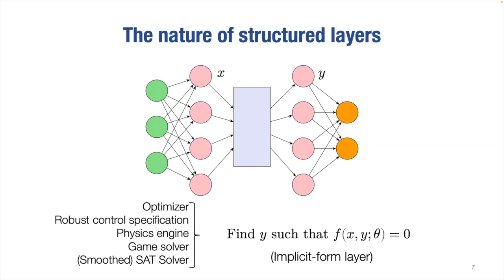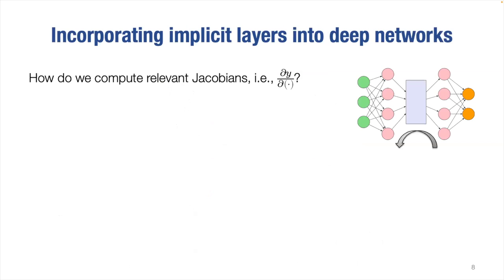We call this an implicit form layer in deep networks. The key point is that this is allowable — nothing prevents us from doing this. A layer can be a whole optimization solver. What's required to make it a layer is that we can compute it and differentiate through it. The whole principle of deep networks is training by backpropagation, meaning we compute gradients or Jacobians, or really left-multiply by Jacobians within the network.